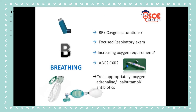Moving on to B for breathing. Rule out immediately life-threatening conditions such as acute severe asthma, pulmonary edema, tension pneumothorax and massive haemothorax. Assess the patient's respiratory rate and perform a focused respiratory exam, looking for respiratory distress, chest deformity, trachea position, hyper-resonant percussion note and decreased breath sounds. Measure oxygen saturation — ideally 94 to 98%, or 88 to 92% for COPD patients. If the patient has a new oxygen requirement, request a chest X-ray, consider an ABG, and treat reversible causes. Consider a stepwise escalation in oxygen therapy with bag-mask valve or NIV.